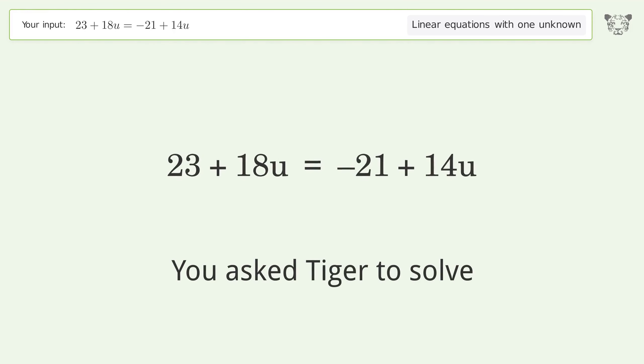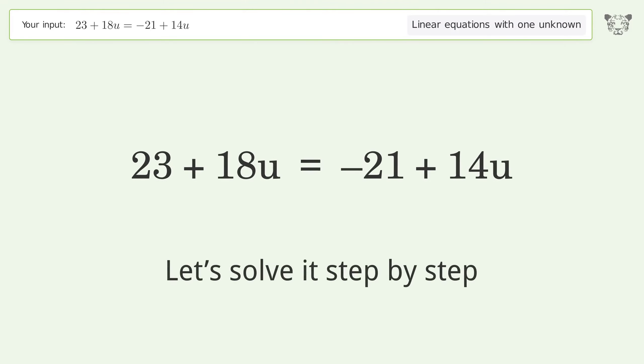You ask Tiger to solve this. This deals with linear equations with one unknown. The final result is u equals negative 11. Let's solve it step by step.